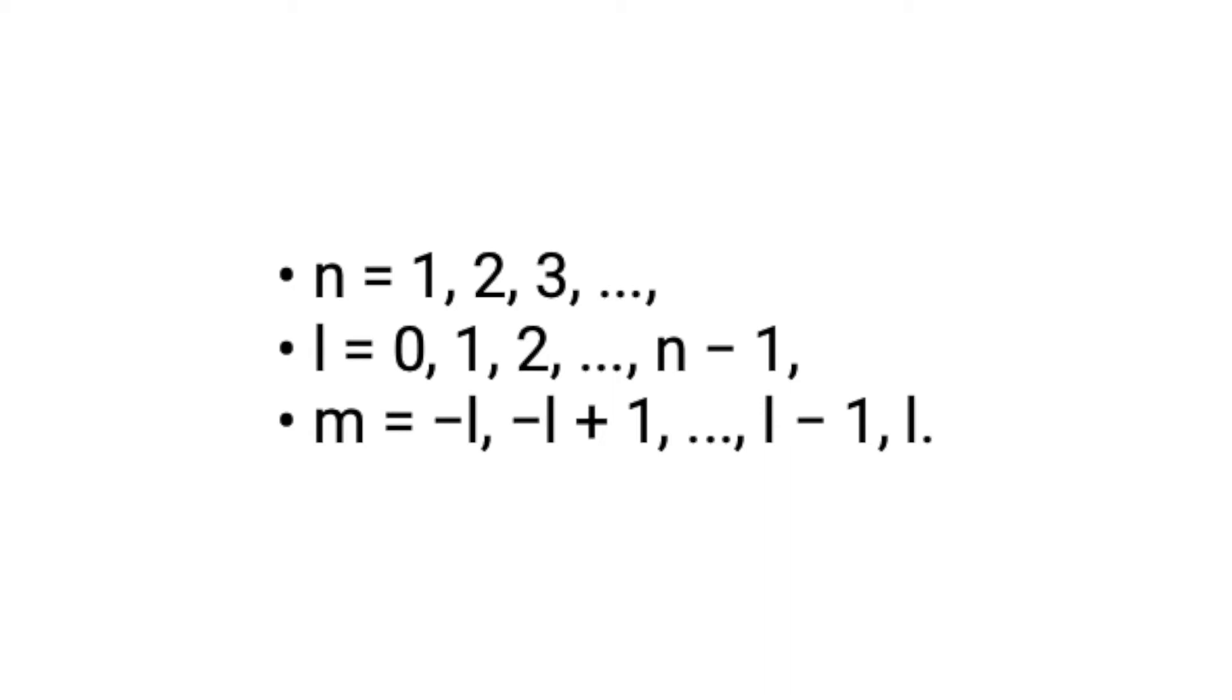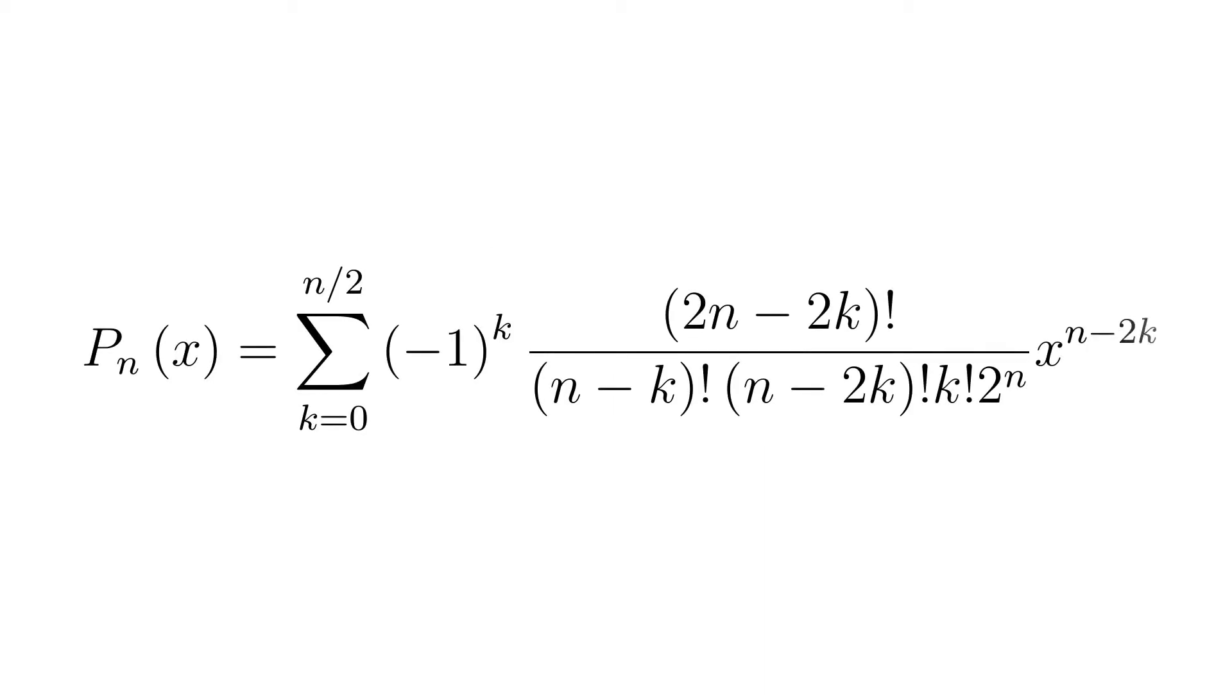The general solution of the Legendre polynomials is pn of x equals the sum of k equals 0 to n half minus 1 to the power of k times 2n minus 2k factorial over n minus k factorial times n minus 2k factorial times k factorial times 2 to the power of n times x to the power of n minus 2k.